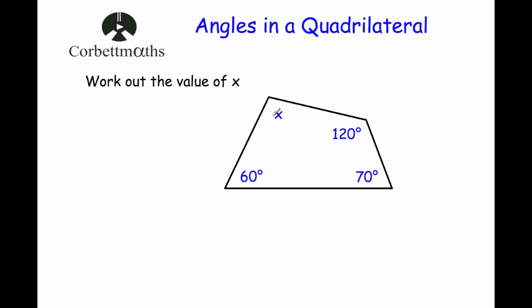To find a missing angle in a quadrilateral, you add up the ones that you know and take it away from 360. So we're going to add up 120, 60, and 70. So 0 plus 0 plus 0 is 0; 2 plus 6 is 8, plus 7 is 15 — put the 5 down and carry the 1; and 1 plus 1 is 2. So when you add up these three angles, we get 250 degrees.